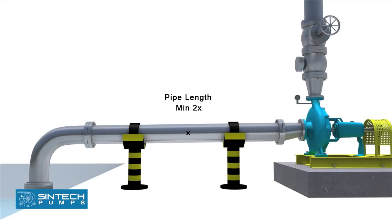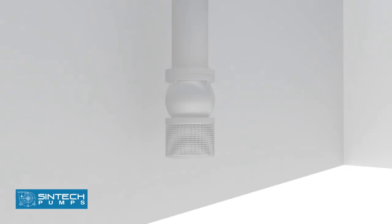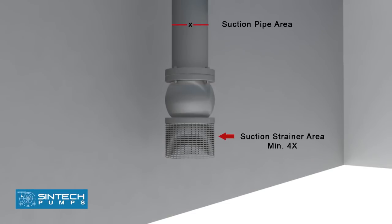The straight length of the pipe after the eccentric reducer should be 2 times the pipe diameter. The suction strainer must be at least 4 times the suction pipe area and the mesh size should screen out solid particles that could clog the impeller.